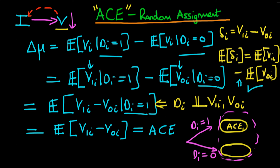This second expectations term is completely unconditional on DI. We could have changed the first expectation to be conditional on DI equal to 0, and the result would be the same. So the average causal effect is the same in either group, and when you combine two things which have the same mean, the overall unconditional average causal effect is also the same.